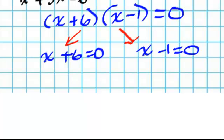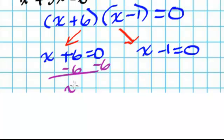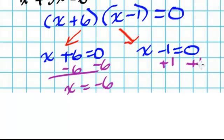I have to solve for x. On the left, in order to solve for x, I subtract 6 on both sides — so x equals negative 6. On the right, I add 1 on both sides — so x equals 1. My solution is x equals negative 6 and x equals 1.